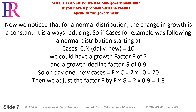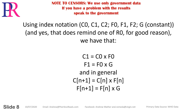We notice that for a normal distribution the change in growth is a constant — it is always reducing. So if cases were following a normal distribution, starting at daily new cases c.n equals 10, we could have a growth factor f of 2 and a growth decline factor g of 0.9. On day 1, new cases equals f times c equals 2 times 10 equals 20. Then we adjust the factor f by f times g equals 2 times 0.9 equals 1.8. Using index notation, we have c1 equals c0 times f0, and f1 equals f0 times g.